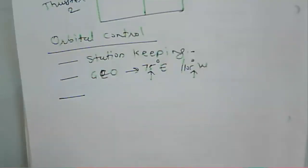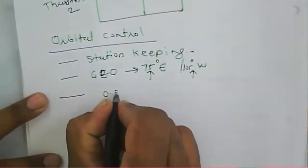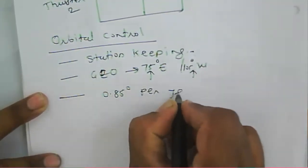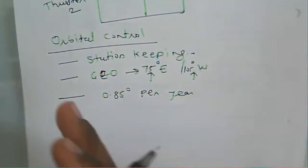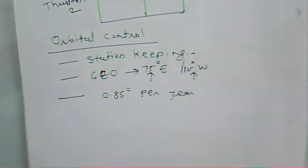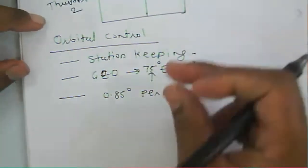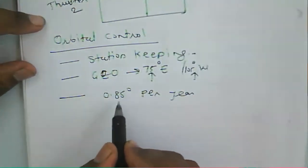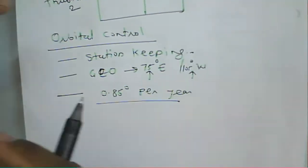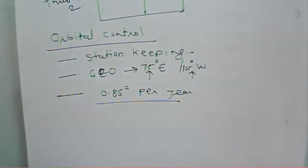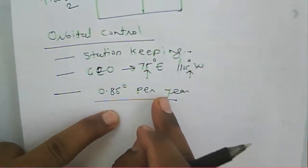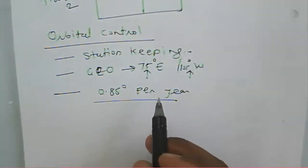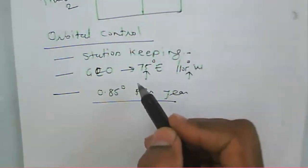Sometimes the latitude changes due to external forces at a rate of about 0.85 degrees per year. By firing a jet or thruster in the opposite direction, we can fix the latitude and longitude. This is called north-south station keeping. So we have both east-west station keeping and north-south station keeping for attitude control.